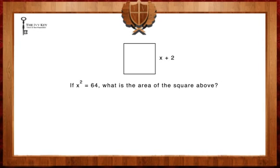The first step to solving this question is to find the value of x. We are told that x squared equals 64. In order to solve for x, we are going to take the square root of each side of our equation. The square root of x squared is x, and the square root of 64 is 8. Hence, x equals 8.